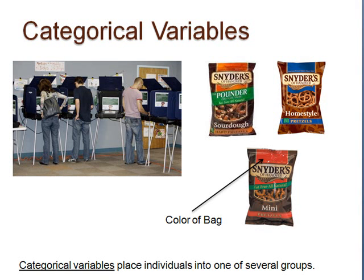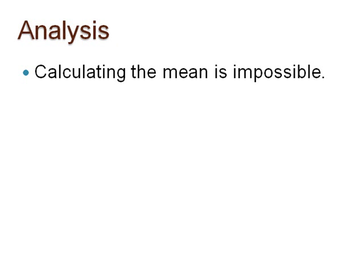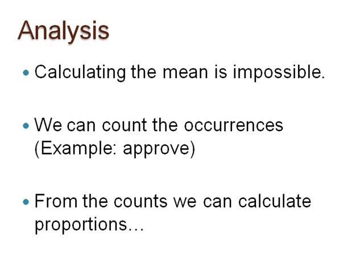Here are possible values of these two variables. Calculating the mean using the values of these variables is impossible. However, we can count the occurrences of, for example, the number of students who approve of the job the president is doing. From that count we can calculate the proportion of students who approve by dividing the number who say they approve by the total number sampled.